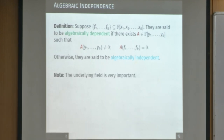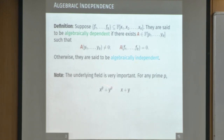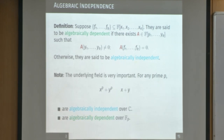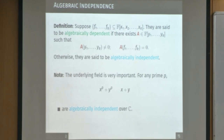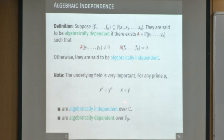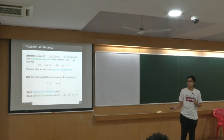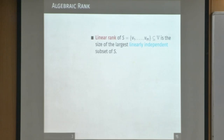One thing to note is that the underlying field is very important. For any prime p, suppose we have the two polynomials x^p + y^p and x + y. Over the complex numbers, these are algebraically independent. But if the underlying field is F_p, then they are dependent because x^p + y^p = (x + y)^p in F_p. Now that we have seen algebraic independence, we move into the notion of algebraic rank.